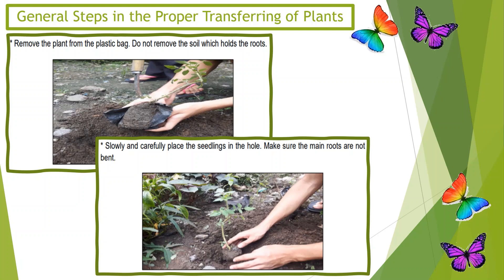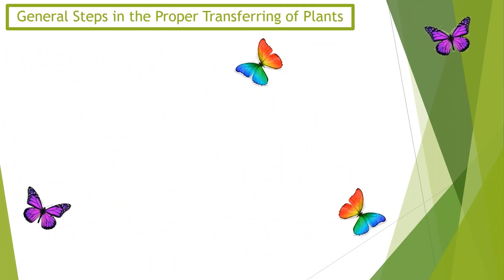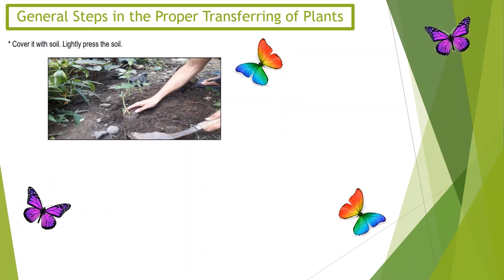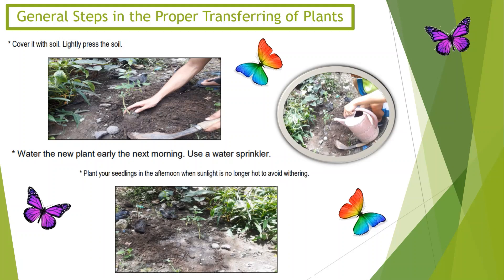Step 5: Cover it with soil and lightly press the soil. Step 6: Water the new plants early the next morning. Use a water sprinkler. Plant your seedlings in the afternoon when sunlight is no longer hot to avoid withering.